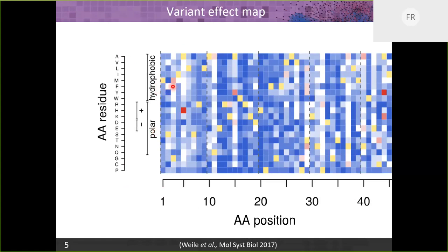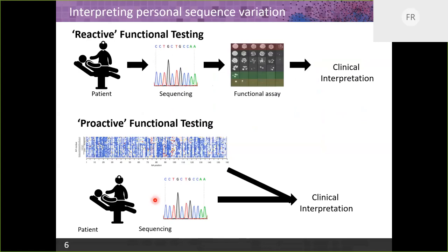In the map, blue is bad, white is neutral, and red is the rarer scenario where a variant performs better in the assay than the wild type. The idea is to put a score on every variant ahead of time, so that when someone comes into the clinic with a new variant never seen before, we've already done the experiment — or in the case of computational work, we've done the analysis — and can feed that functional evidence into a clinical interpretation.